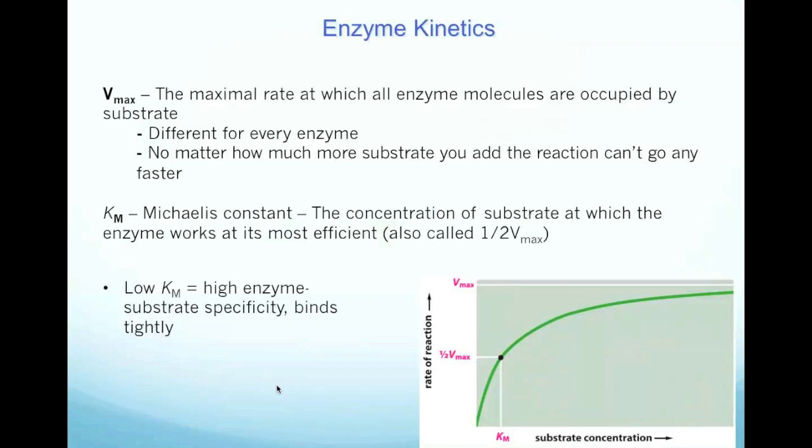So Km is measuring the affinity of the enzyme for its substrate, not the actual rate. So a low Km means that the enzyme has a very high affinity for its substrate, because it doesn't take much substrate to reach one half Vmax.